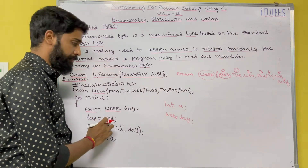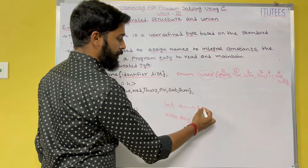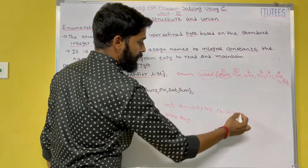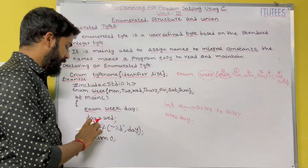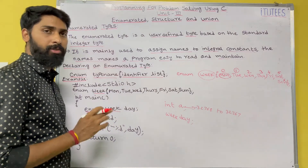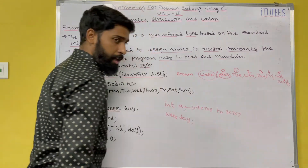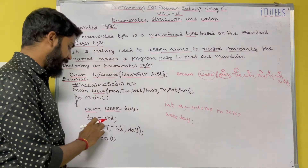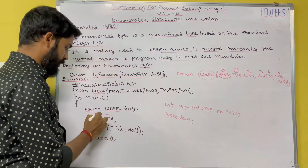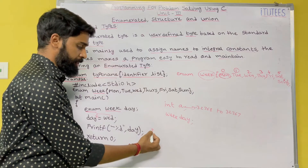And day equals to Wednesday. For this day variable, you can only assign the values Monday, Tuesday, Wednesday, Thursday, Friday, Saturday, and Sunday. Day equals to Wednesday — Wednesday is 2 — so 2 is stored in 'day'. So printf %d day now prints 2 as output.